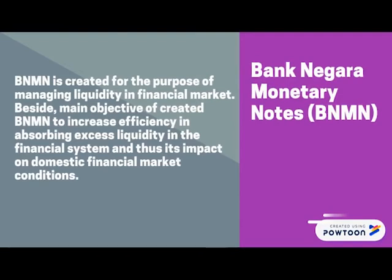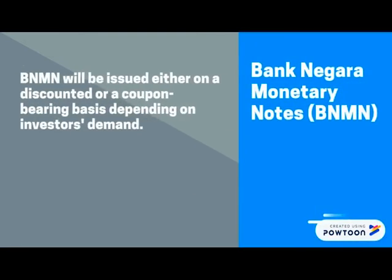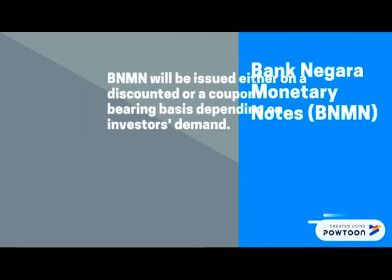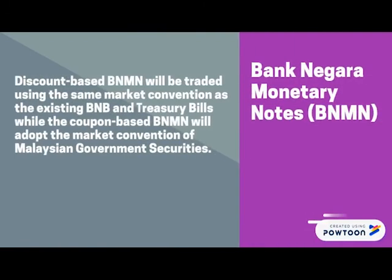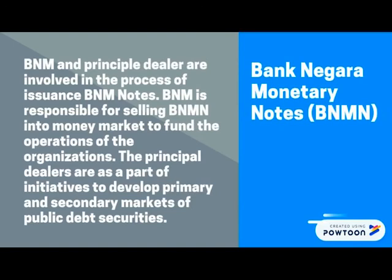The main objective of creating BNMN is to increase efficiency in absorbing excess liquidity in the financial system and its impact on domestic financial market conditions. BNMN will be issued either on a discounted or coupon-bearing basis depending on investor demand. Discount-based BNMN will be traded using the same market convention as existing BNM bills and treasury bills, while coupon-based BNMN will adopt the market convention of Malaysian Government Securities. BNMN and principal dealers are involved in the issuance process. BNMN is responsible for selling notes into the money market to fund the operations of the organization, while principal dealers are part of initiatives to develop primary and secondary markets of public debt securities.